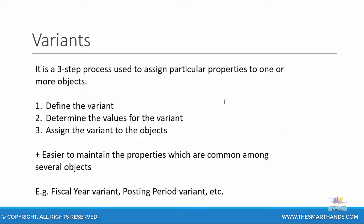You create a variant, you assign some properties to the variant, and you can assign it to one or more objects. This makes it easier to maintain the properties of variants which are common among several objects. Examples of variants are fiscal year variant, posting period variant, and you will see some other examples frequently used in the system like costing variant and so on.